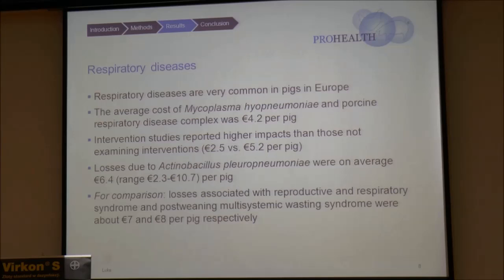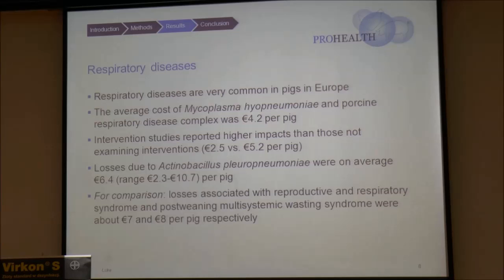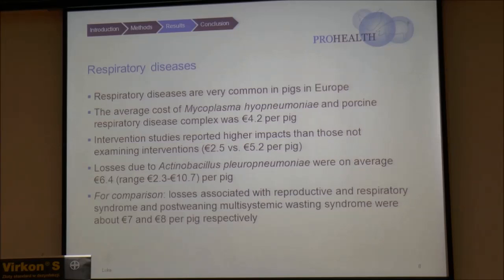Losses associated with Actinobacillus pleuropneumonia were varying quite a lot, but on average in these studies they were 6.4 euros per pig. Comparing those numbers to some non-production diseases that have been studied a lot, losses associated with porcine reproductive and respiratory disease syndrome and PMWS were about 7 to 8 euros per pig respectively. Given that mycoplasma, for instance, is very common in pigs, it has very important economic implications at the farm level.